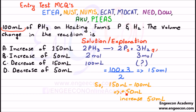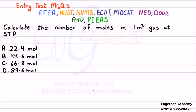Subtracting the initial 100 ml from the product 150 ml gives +50 ml. The plus sign indicates an increase in volume. So B is the correct answer.